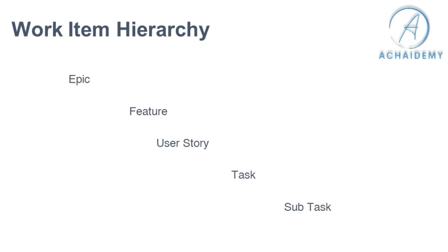The hierarchy you should know is that in Scrum we have epics, features, and user stories. User stories are something that is completed within a sprint, a feature can span multiple sprints, and epics can span multiple releases.